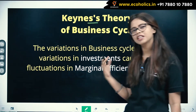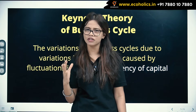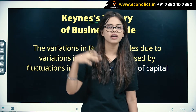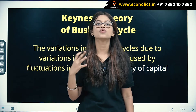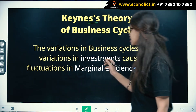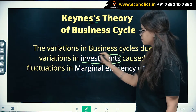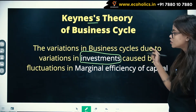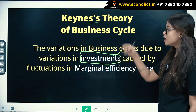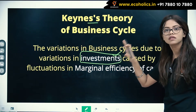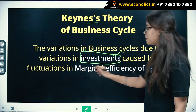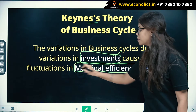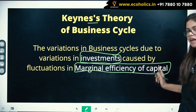So what does this theory say? This theory tells us that the fluctuations or variations in your business cycle are due to investments. The variations in business cycles are due to variations in investments. Now, this investment also depends upon one thing — that is your MEC, the Marginal Efficiency of Capital.